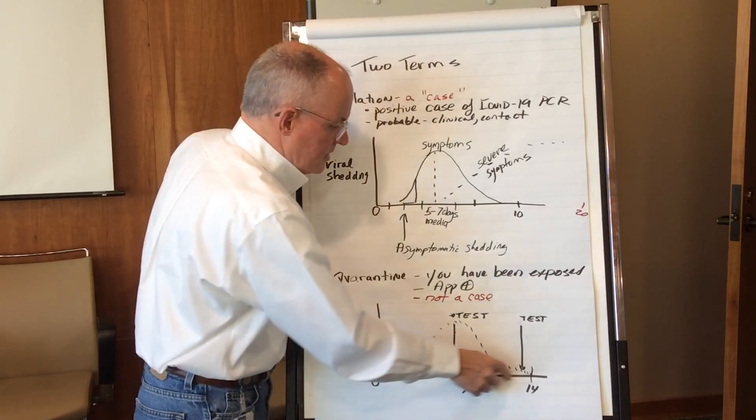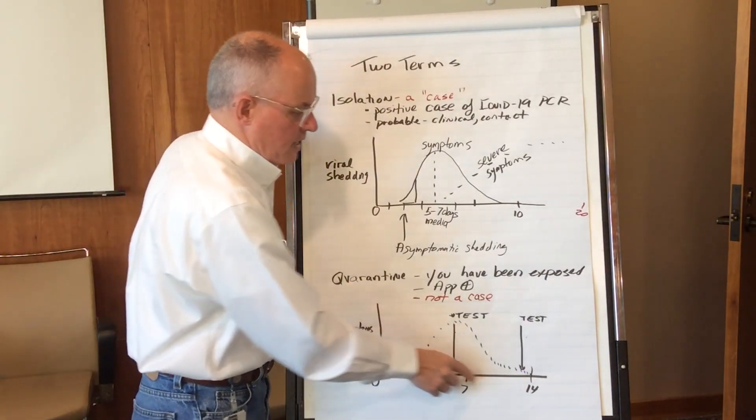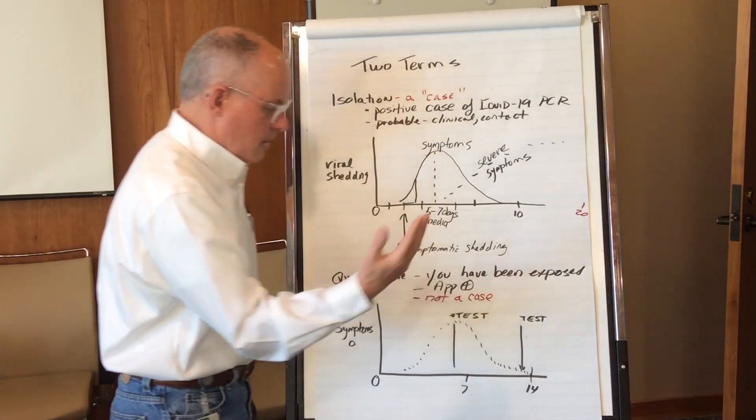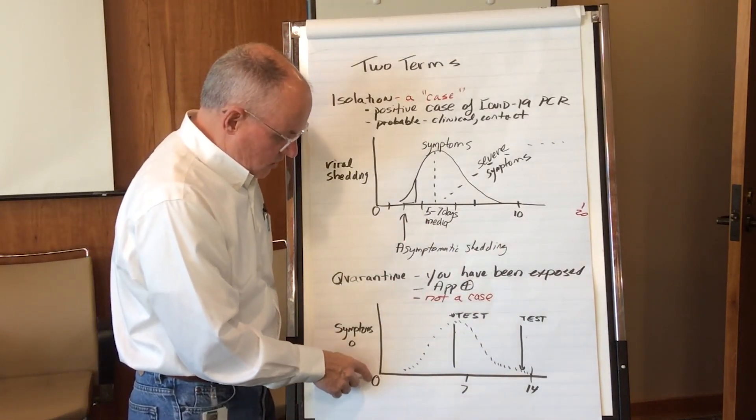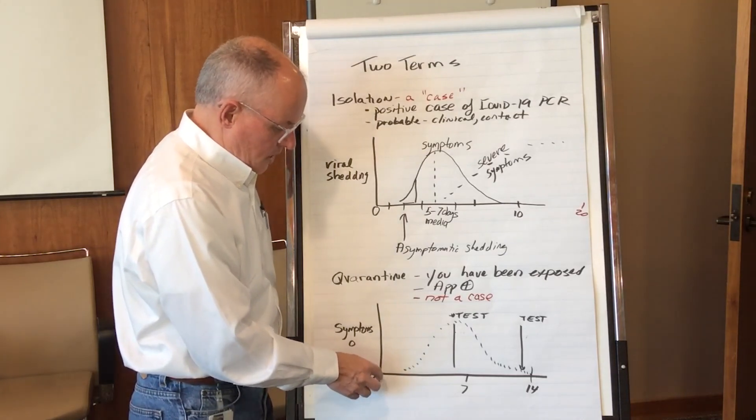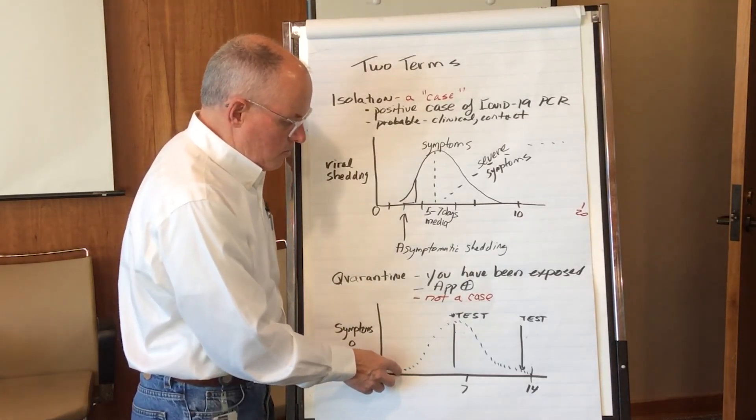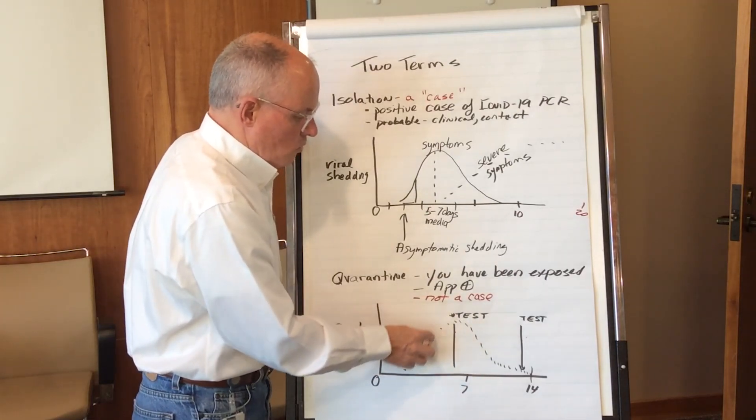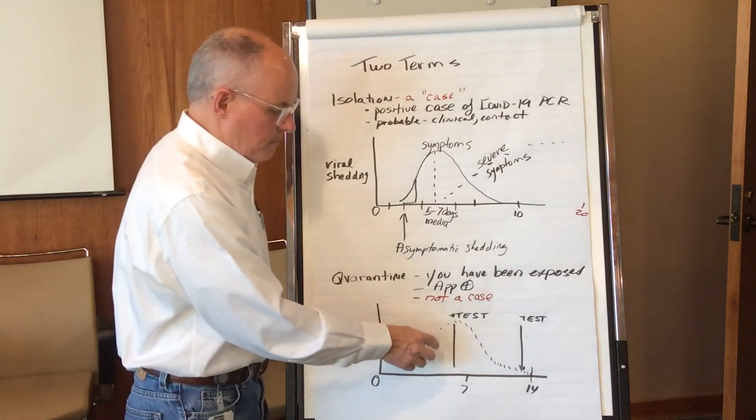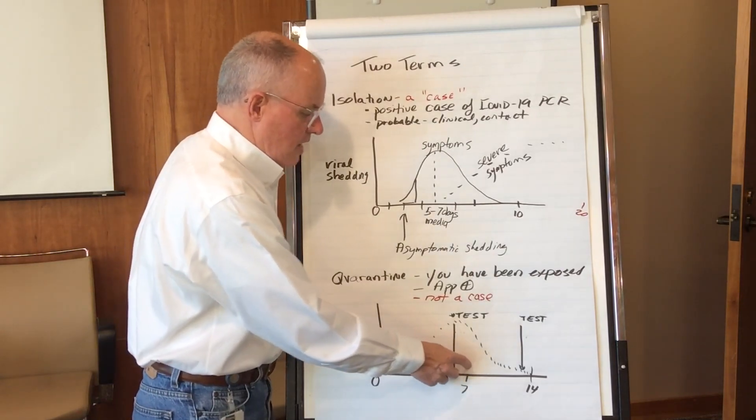...have symptoms during this 14-day period and have a negative test that they won't be infectious to anyone else. So we, at the time of your exposure, count that as time zero. We monitor you on a regular basis. The vast majority of individuals will have symptoms if they're going to develop COVID-19 between day five and day seven from the exposure.